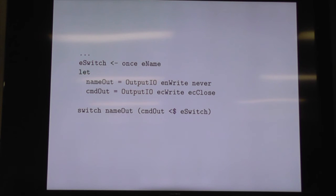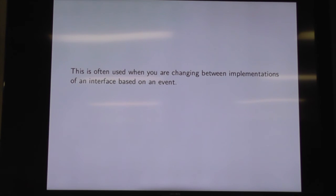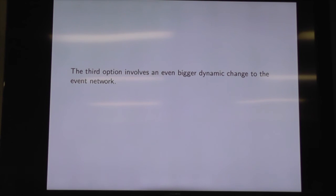A better option, both for safety against buggy behaviour where all of my one-word chatting was actually trying to change the name, and for GC reasons — you can filter the inputs and switch the outputs. This is often useful when you have various implementations and want to change between them based on an event. You could go from batched notification processing to streaming and back based on some option, and switch would allow you to actually change that out live.